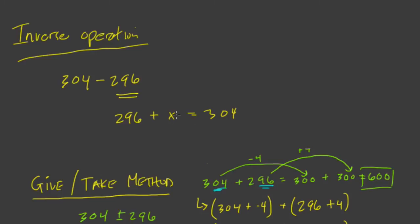Yes, to solve for x, to solve for x here, you would have to subtract 296 from 304. And yes, you would be back at the original problem. You're not changing anything. You're just changing the way your brain looks at the problem.